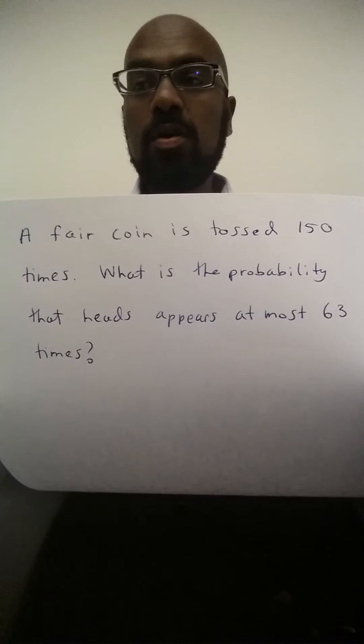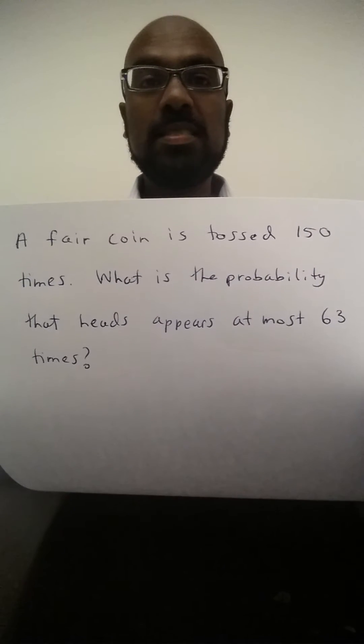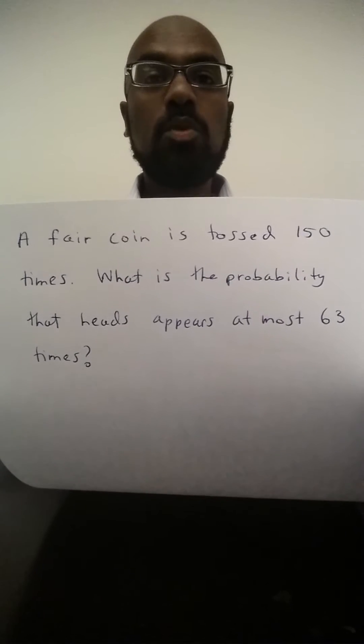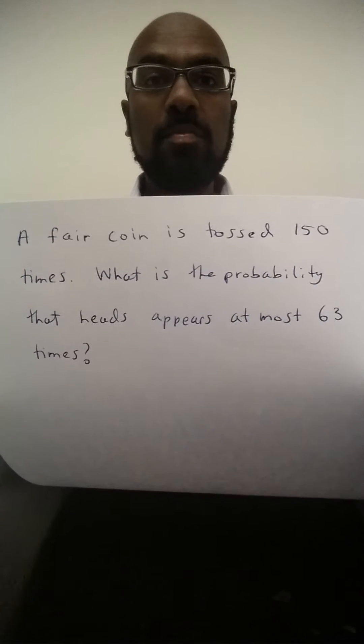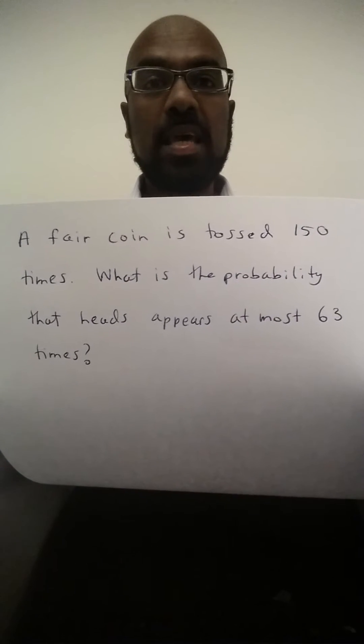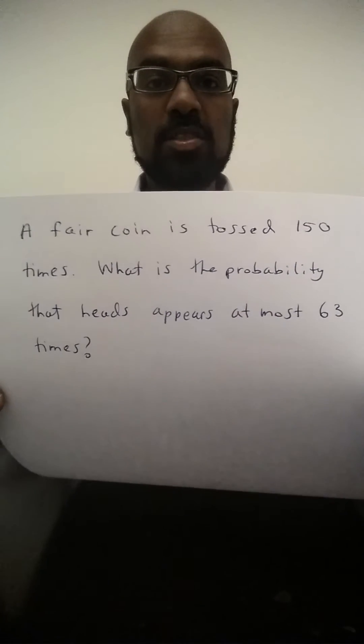The number of ways in which we can obtain exactly k heads by flipping 150 coins is 150 choose k, the binomial coefficient 150 choose k, so the number of ways of selecting k items from 150, so we'd be selecting k heads out of the 150 tossed coins.